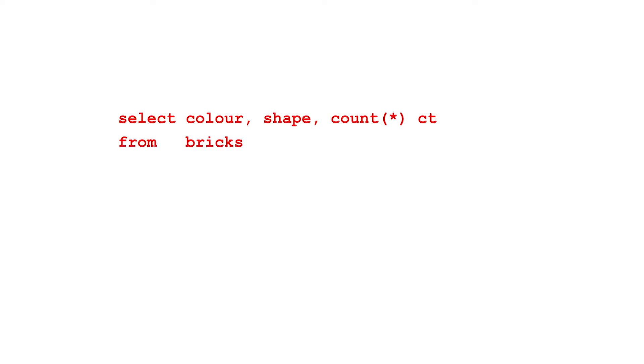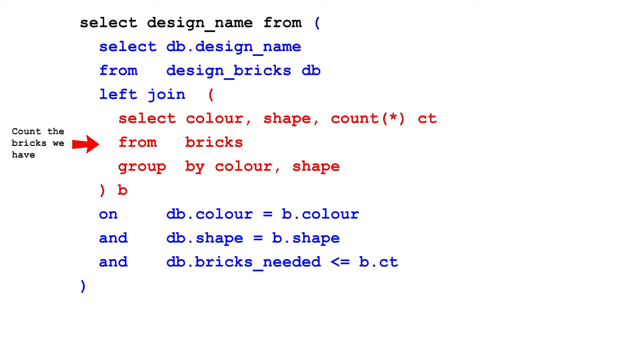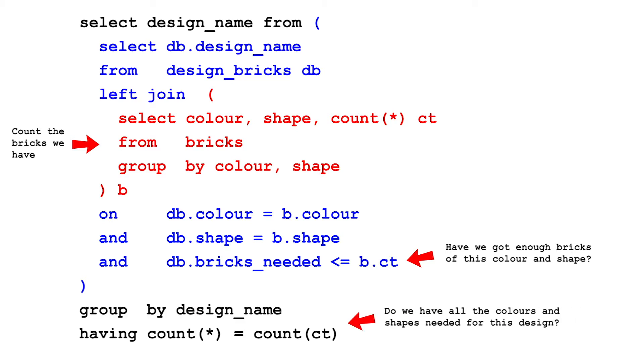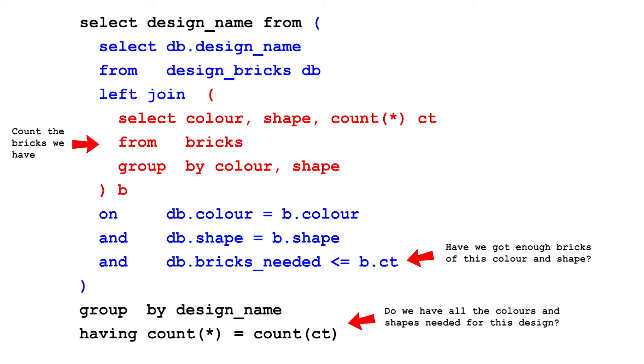To do this, start by grouping your bricks by colour and shape. Then wrap another query around this to see which colours and shapes you have enough of for which models. Then stick this in yet another inline view to ensure you've got all the different colours and shapes needed for each design.